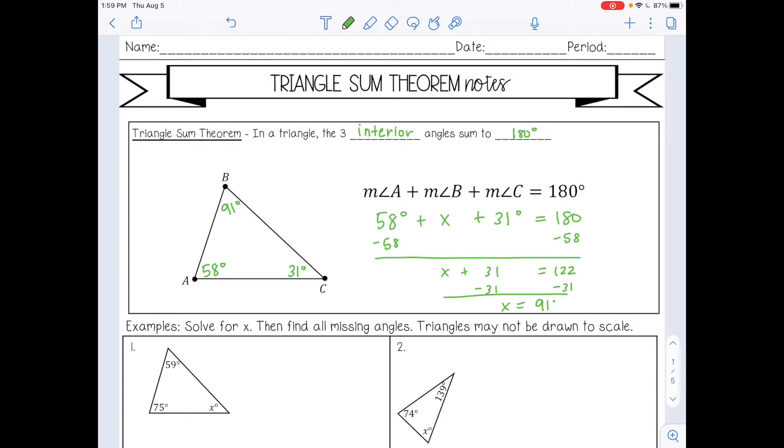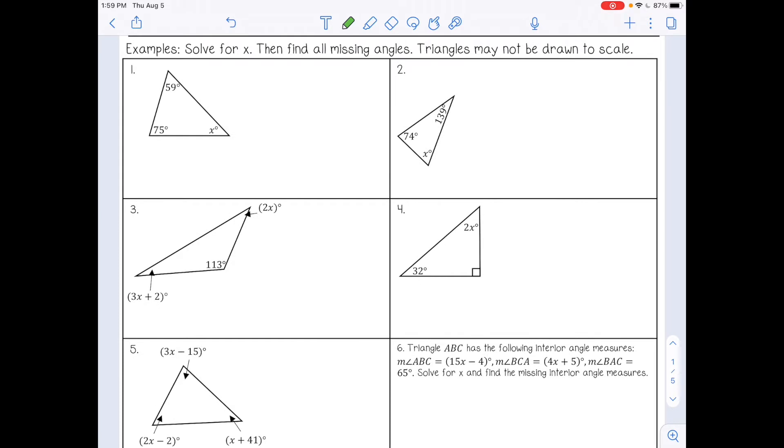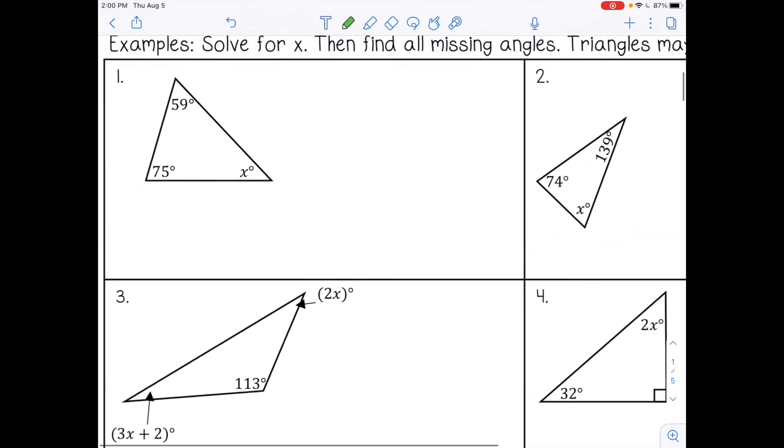Of course, that looks like an acute angle. So again, it's not to scale. That's okay. Just remember that they always add up to equal 180 degrees. So let's find some examples here. It says to solve for X and then find all missing angles. Triangles may not be drawn to scale. A lot of times on tests, like state tests, they may not be drawn to scale because you don't want to just guess based on how the triangle looks. You want actual proof that the angle measure is what we know it is based on 180 degrees.